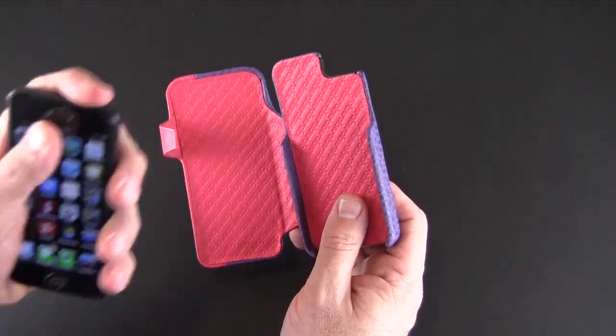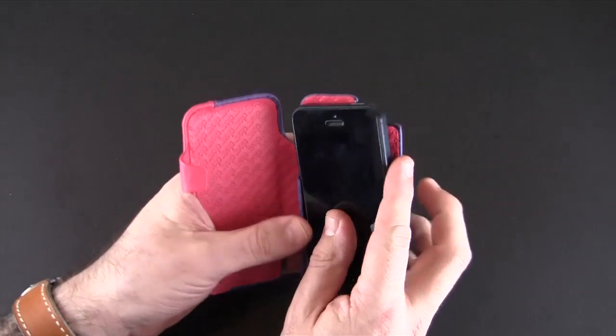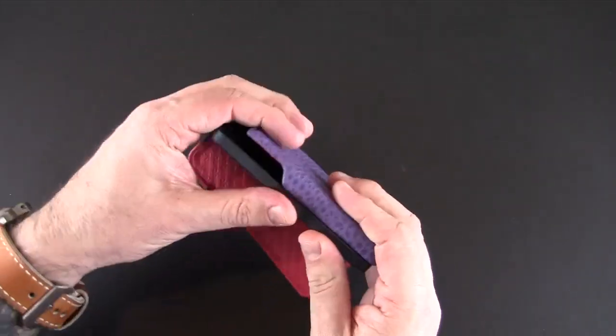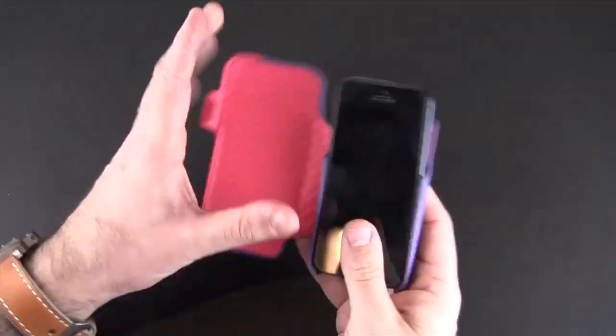To put the iPhone in, it's like a snap on the back. You just click it in like so and then pop it into place. Just make sure it's all aligned like that.